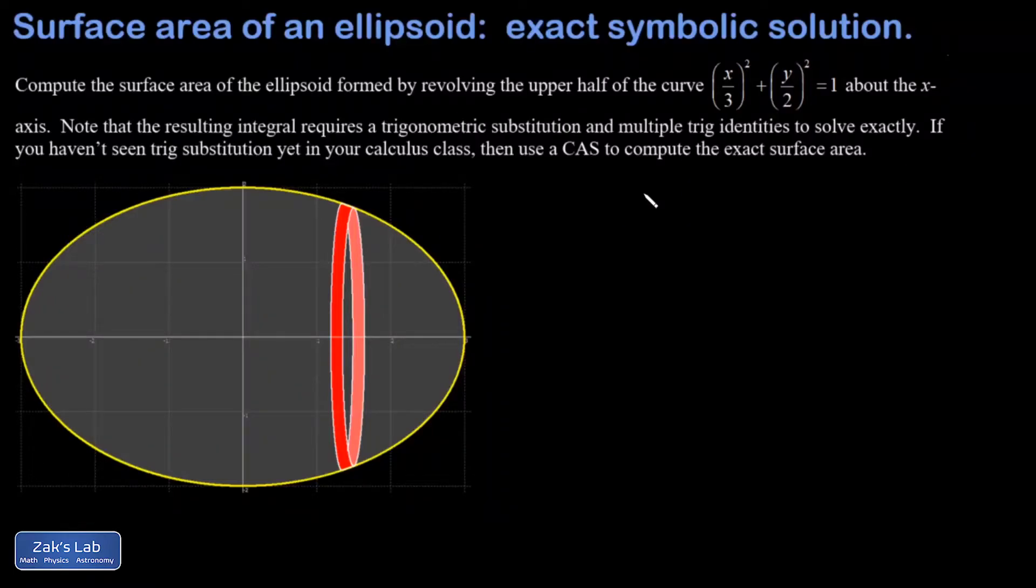In this video, we set up the integral for the surface area of the ellipsoid found by revolving this curve, x over 3 quantity squared plus y over 2 quantity squared equals 1, about the x-axis. Once the integral is set up, it turns out that it can actually be calculated in exact form by using a trigonometric substitution. At the very end, I'm going to verify my symbolic solution by checking with a computer algebra system. If you haven't seen trigonometric substitutions yet in your calculus class, you can skip ahead to the end of the video where I verify my symbolic solution.